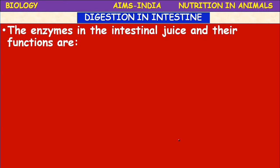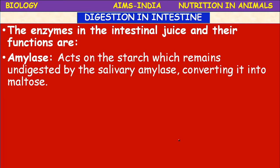Let us now look at the enzymes in the intestinal juice and their functions. Amylase enzymes digest carbohydrates — they are hydrolytic enzymes. Amylase acts on the starch which remains undigested by salivary amylase and converts it into maltose.